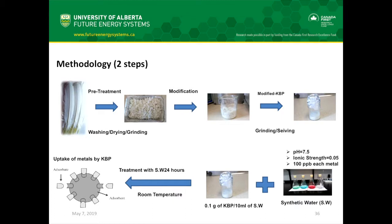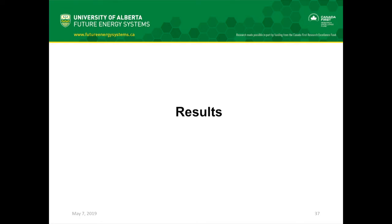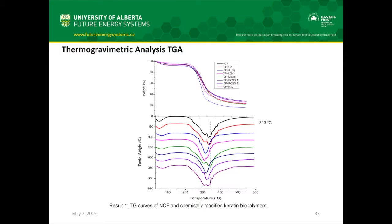We prepared seven keratin biopolymers — one is native chicken feather without any chemical modification, and the others are modified by treating with different functional dopants. We prepared synthetic wastewater with ionic strength of 0.05 and pH 7.5, spiked with nine heavy metals at a concentration of 100 ppb each. We then treated this synthetic wastewater with the keratin biopolymers and analyzed the residual concentrations of toxic metals after adsorption. We also performed characterization studies to analyze changes in surface morphology, surface functionalities, and structural integrity. TGA determined thermal stability — chemical modification did not significantly affect thermal stability, and all keratin biopolymers were stable up to 343 degrees Celsius.